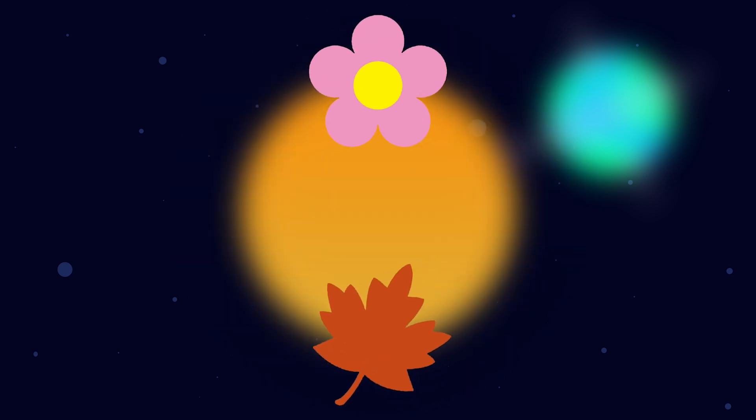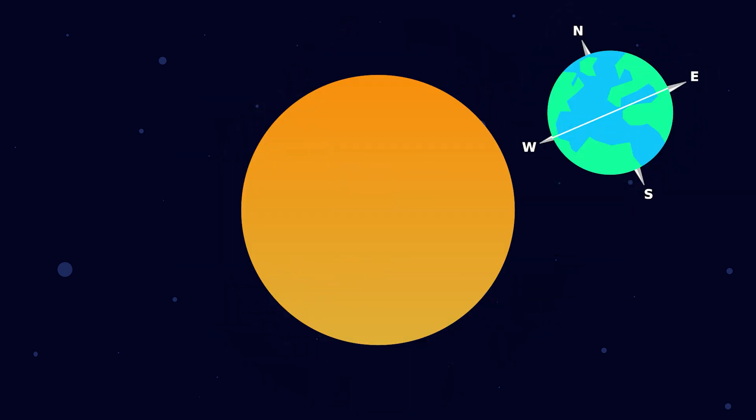During spring and fall, also known as the equinoxes, the Earth's axis is not tilted towards or away from the Sun. This results in nearly equal daylight and nighttime hours for both hemispheres.